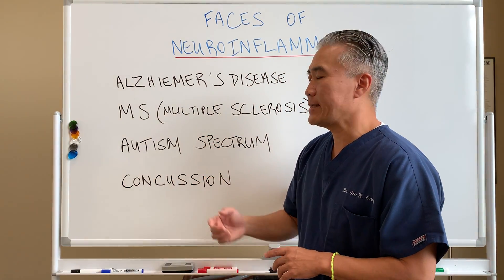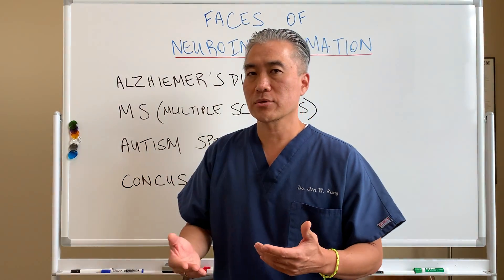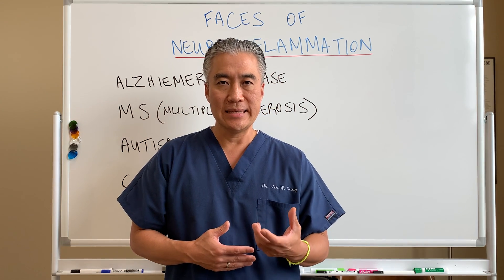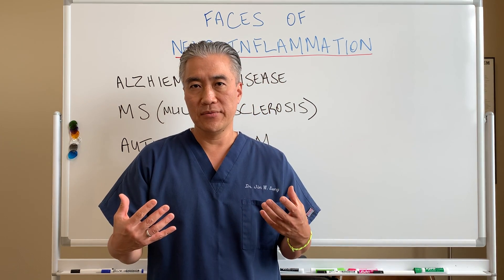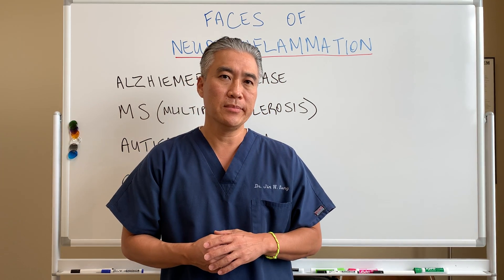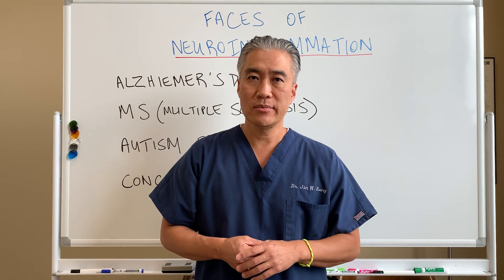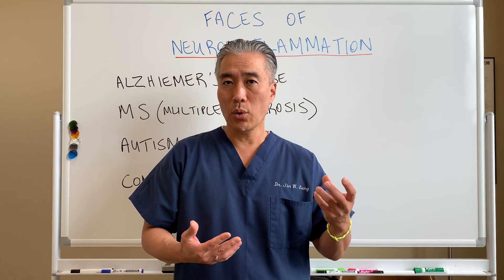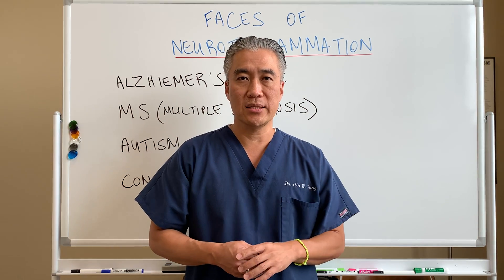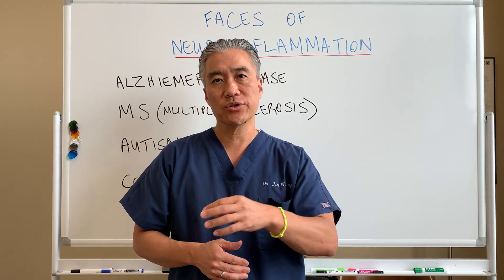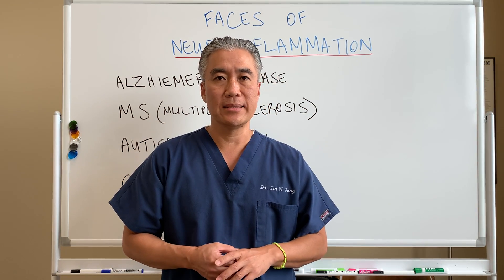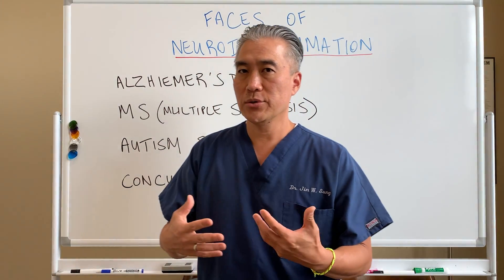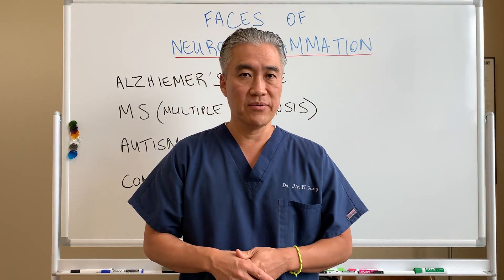Another condition is MS, or multiple sclerosis. MS is a demyelination disease — the myelin of the nerve tissue is destroyed. It's an autoimmune condition, and that autoimmune condition causes inflammation. Alternatively, an inflammatory process could have triggered the demyelination in the first place. So when we look at multiple sclerosis, it also has an underlying mechanism of inflammation.